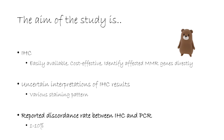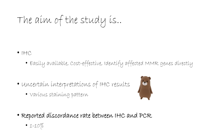Immunohistochemistry is readily available, inexpensive, and can be used to directly identify relevant MMR genes. However, because of the heterogeneous or ambiguous variety of staining patterns, the interpretation of immunohistochemistry results is likely to be uncertain.